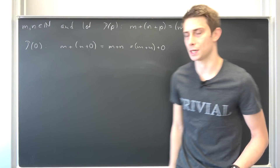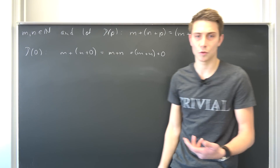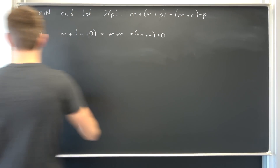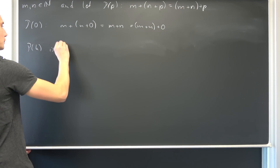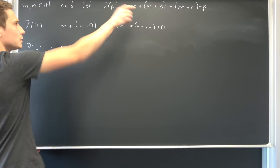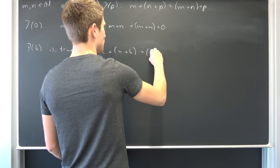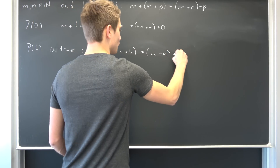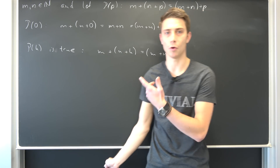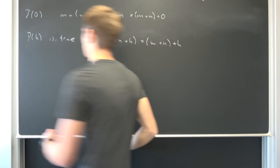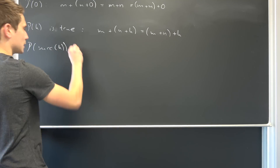The base step is really quite easy. Now we are going to assume that our proposition is true for some arbitrary k out of the natural numbers — so P(k) is true, meaning m + (n + k) = (m + n) + k. Now we want to show that this ensures our proposition to be true for P(succ(k)).